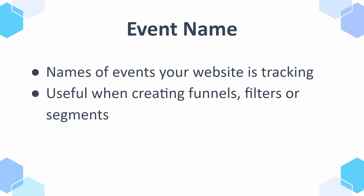Then I want to mention event name, which describes the names of the events on your website. This is useful when you're creating funnels, filters, or segments. For example, if you want to look only at people that purchased, you can set in the filters: show me people with event name equals 'purchase'.